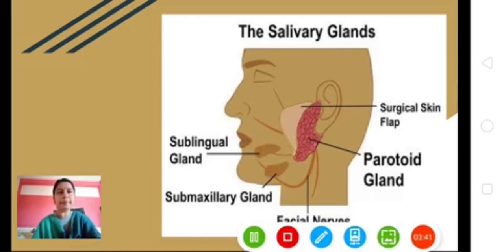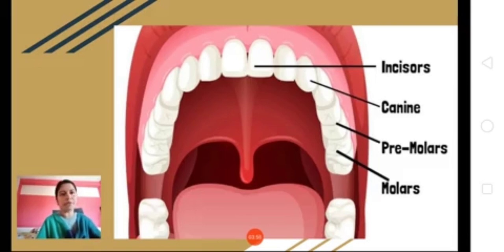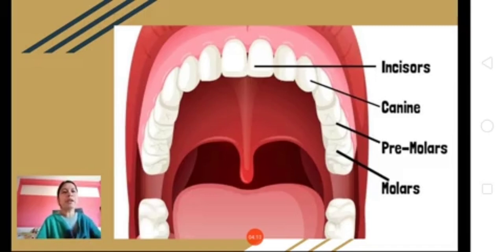The next part inside the buccal cavity is the teeth. Teeth are used for cutting, chewing, and grinding. In an adult human being there are 32 teeth — 16 on the upper jaw and 16 on the lower jaw. In each jaw there are four incisors, two canines, four premolars, and six molars. This is the normal amount of teeth which should be present.